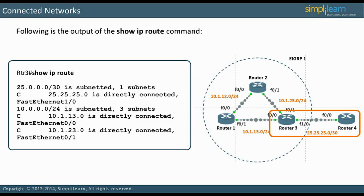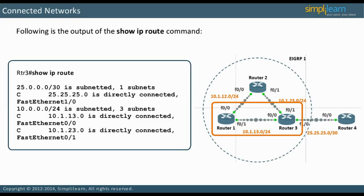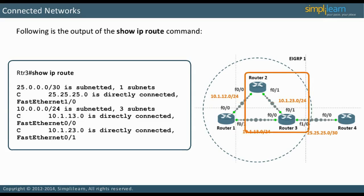In this case, the outgoing interface is FA10. We also have two routes under the 10 network: 10.1.13.0/24, which has an outgoing interface of FA00, and 10.1.23.0/24, which has an outgoing interface of FA01.